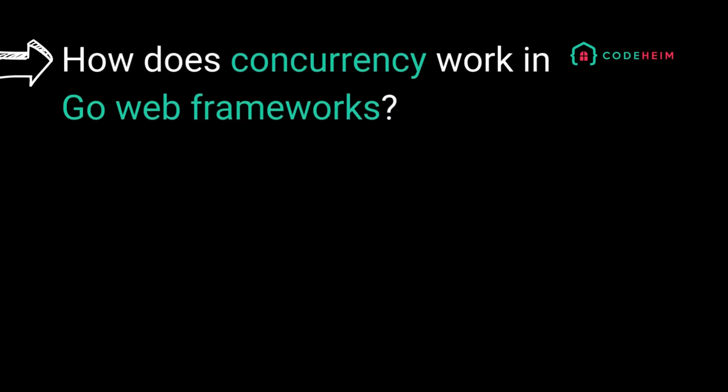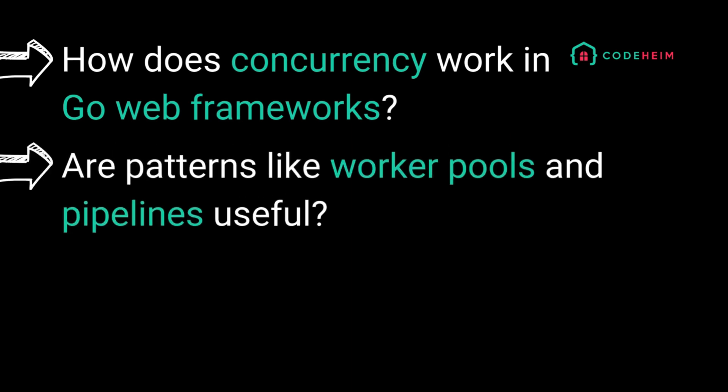In this episode, we'll explore how concurrency works in Go web frameworks like NET/HTTP and GIN. We will also explore if patterns like worker pools and pipelines are useful in real scenarios, and how to offload heavy tasks to background systems and apply concurrency patterns to background processing. Let's dive in.